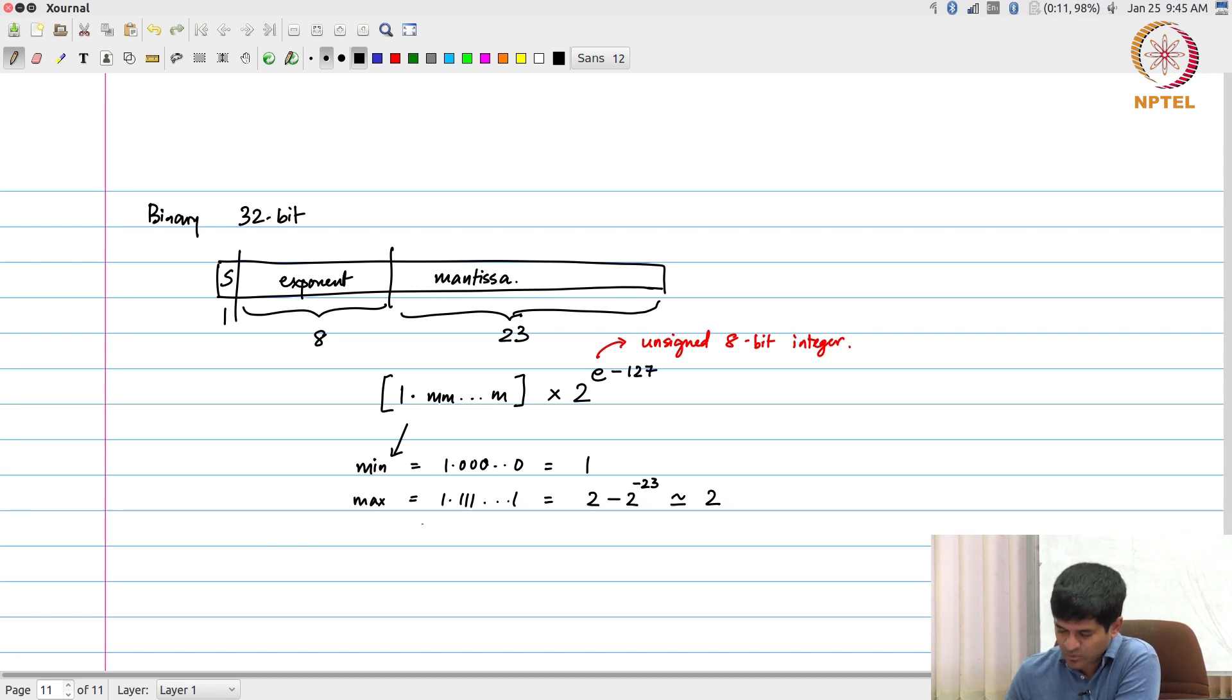An example number would be something like 0, 0, whatever, you know, and something of this sort. This would be exponent, this would be mantissa, and this is the sign.